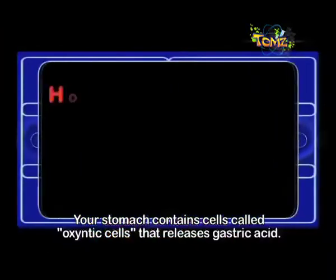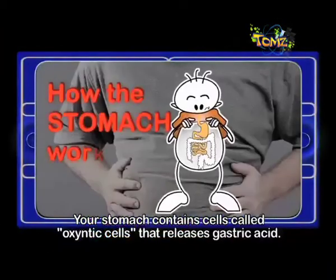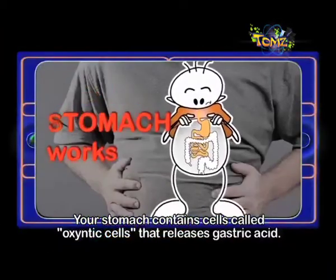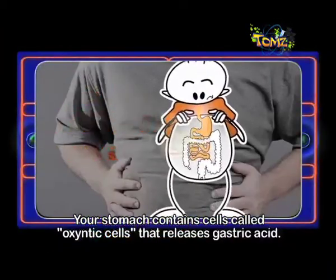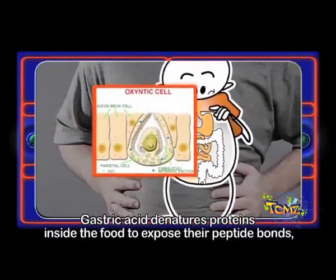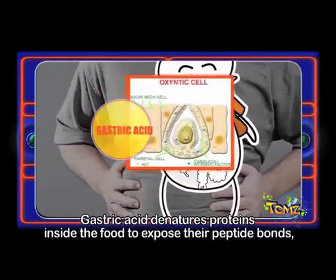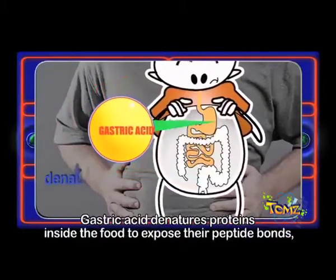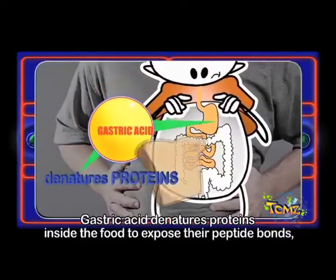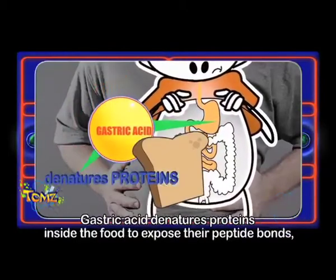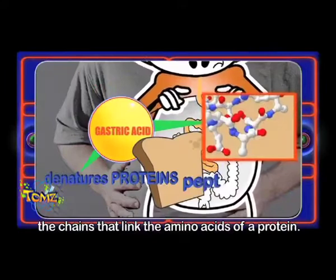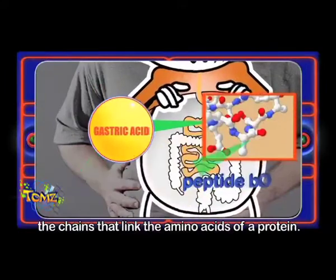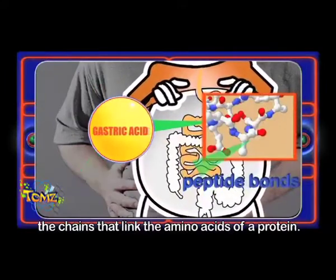Welcome to the Oxyntic cells that releases gastric acid. Gastric acid denatures proteins inside the food to expose their peptide bonds, the chains that link amino acids of a protein.